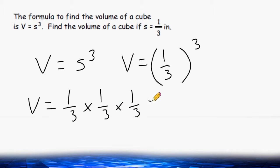Next, let's multiply all of the numerators together. One times one times one is one. And for the denominators, we have three times three, which is nine, and nine times three, which is 27.